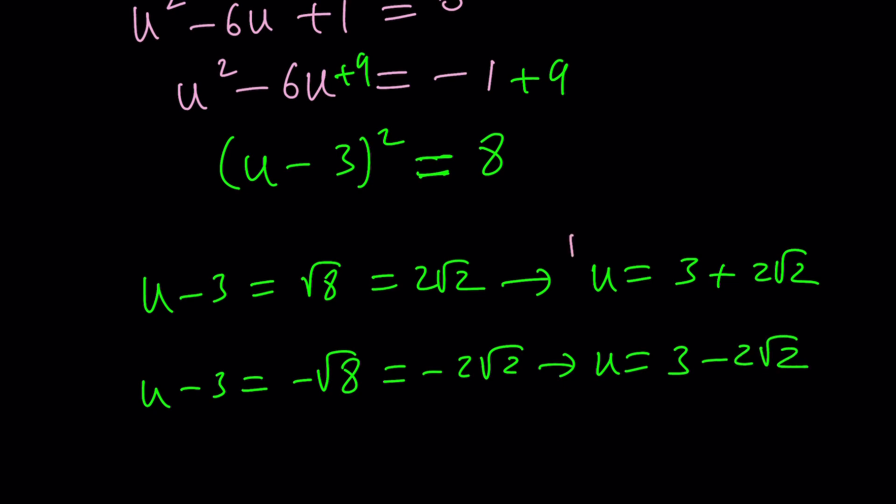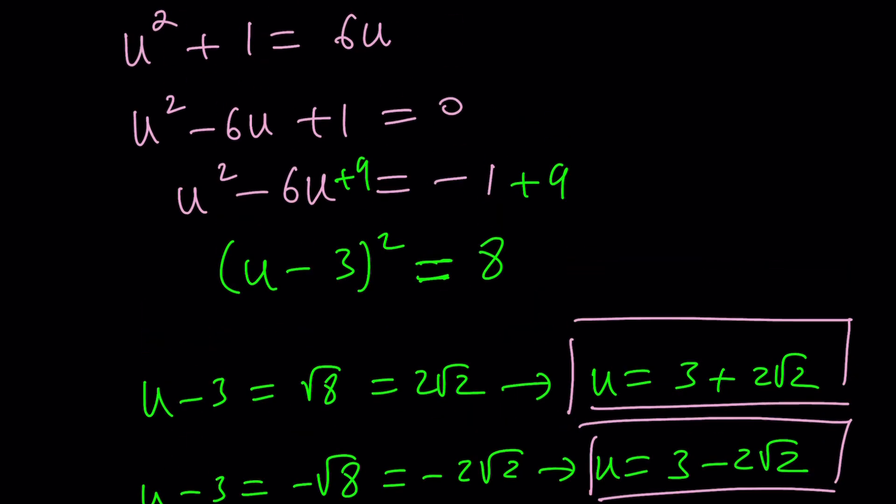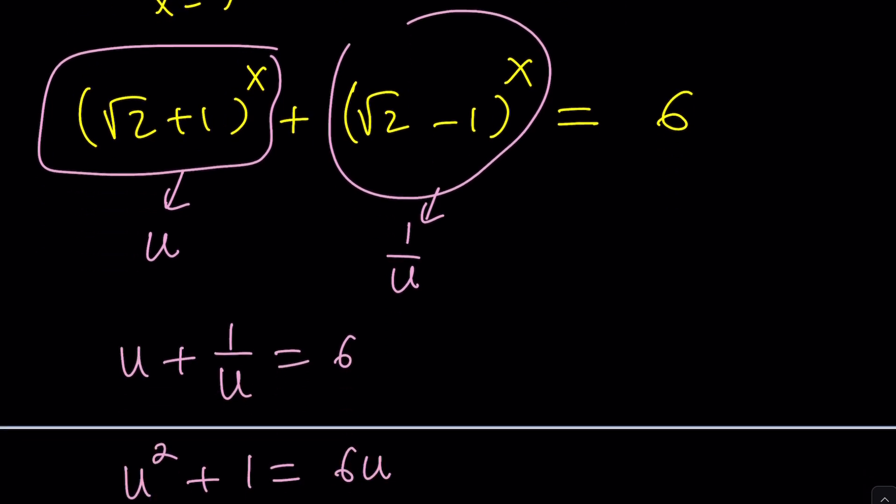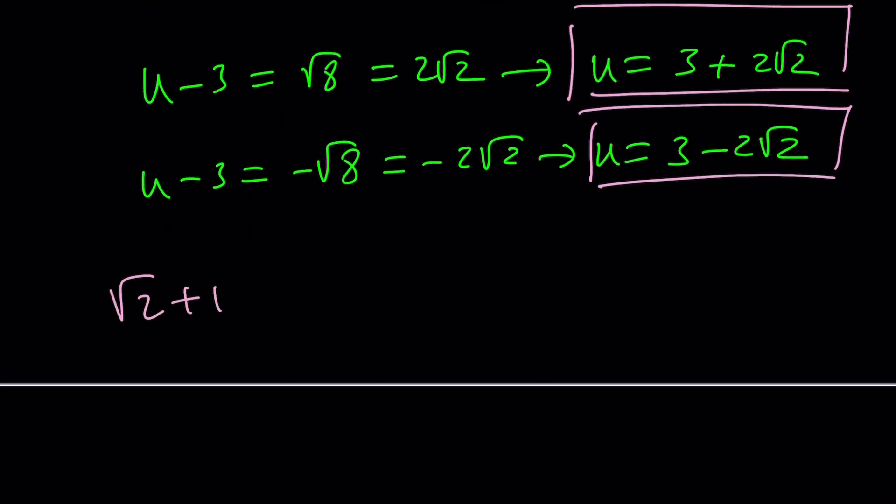Now, what do you do with those? Well, I'll substitute back or back substitute. What is U? U. Who are U? Who is U? So U is root 2 plus 1 to the power of X. That's U. Okay. And we're going to set it equal to 3 plus 2 root 2 or 3 minus root. Let's do this one first.